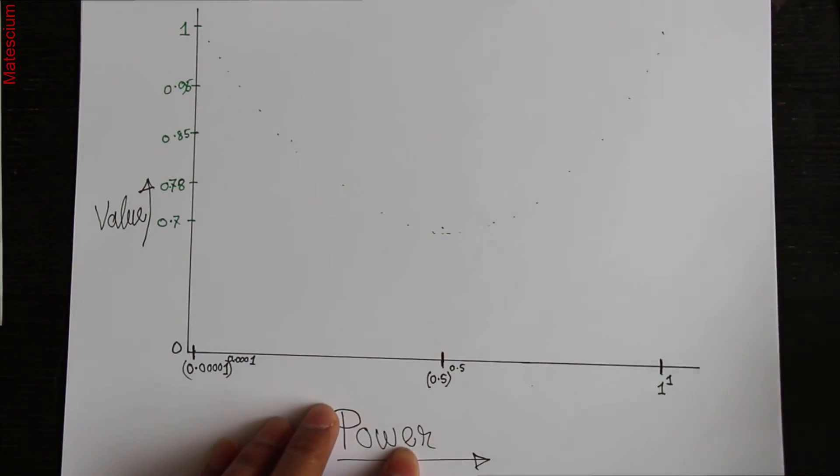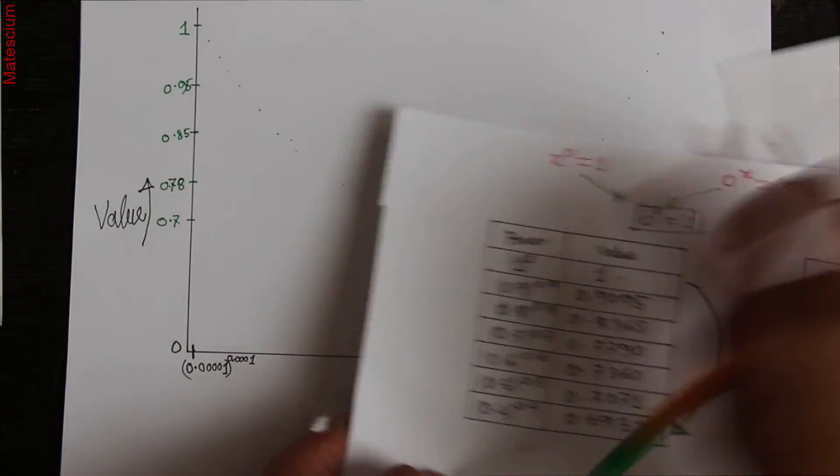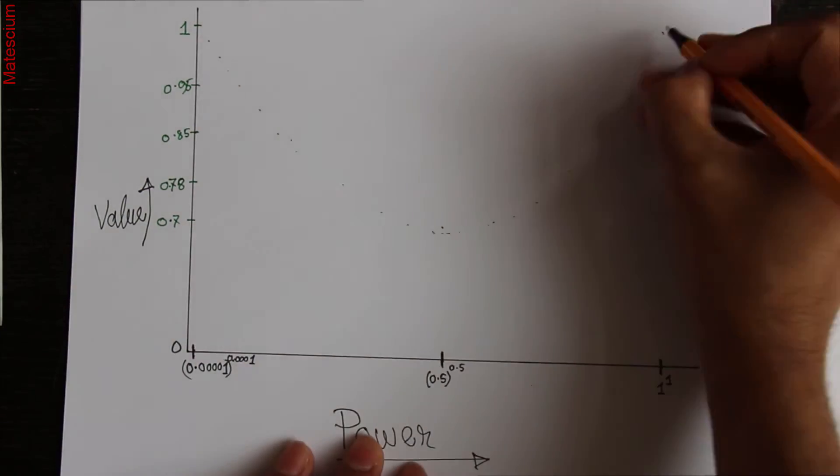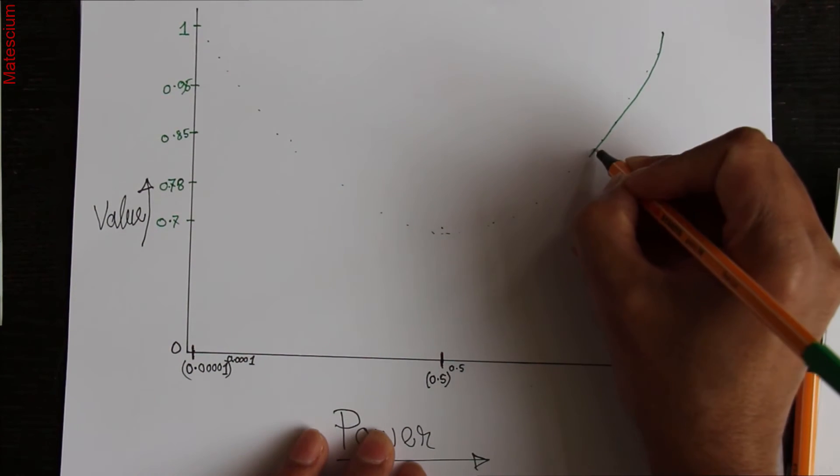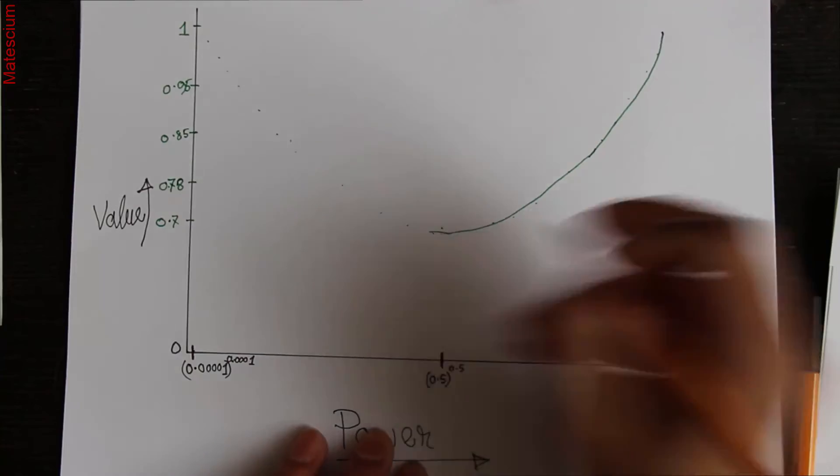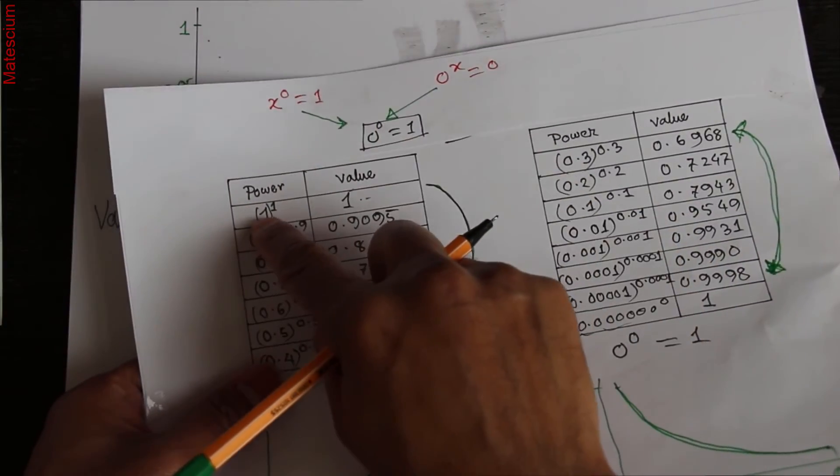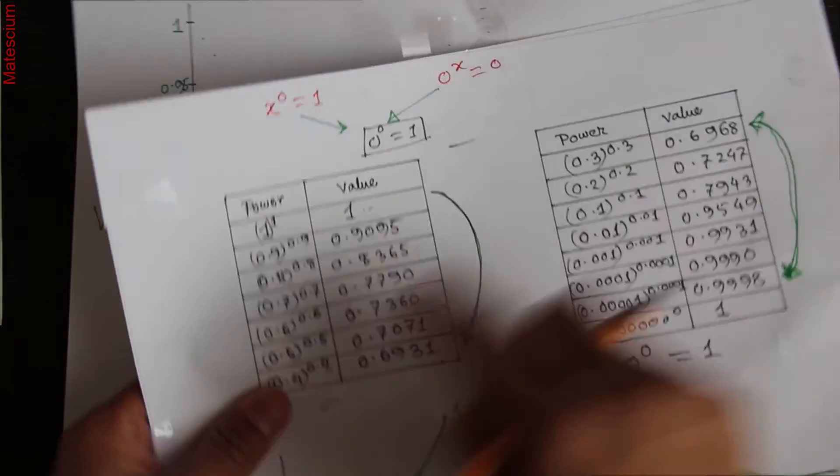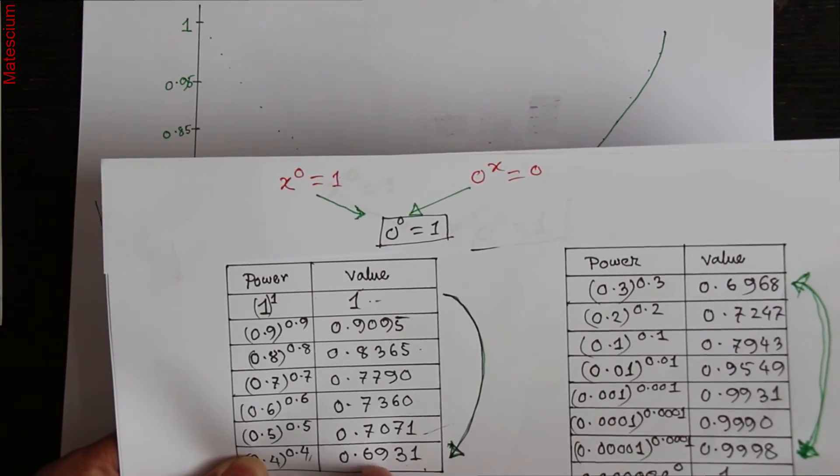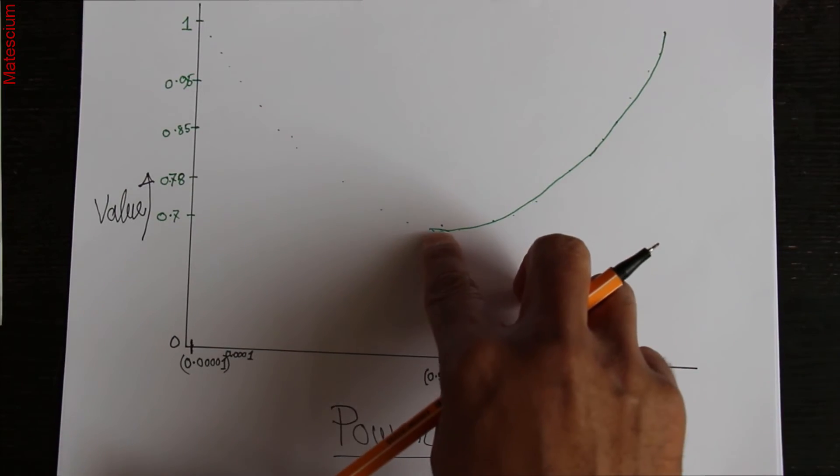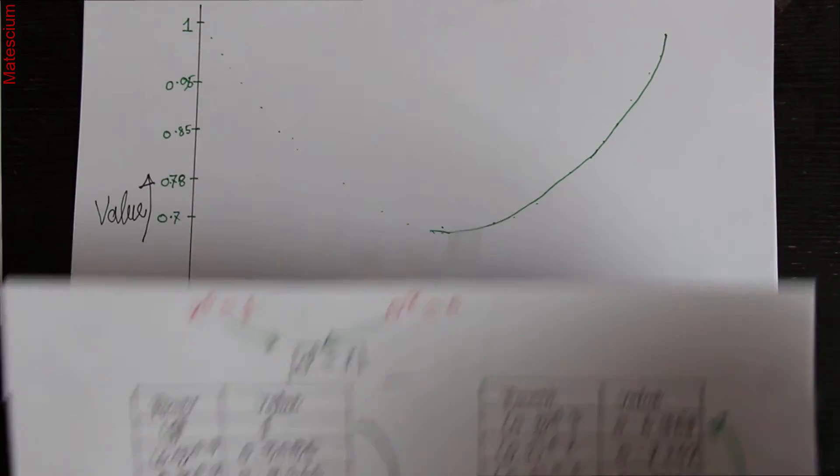As I told you, I start from 1. It gradually decreases until this point. Look at here, I started from 1 and power is gradually decreasing, so value also decreases from 1 to 0.693. Let's say this point. And then again, I am decreasing this power from here to here.